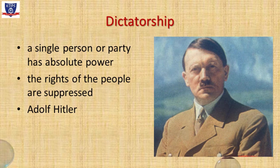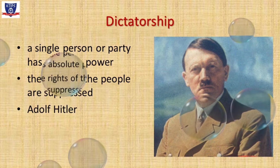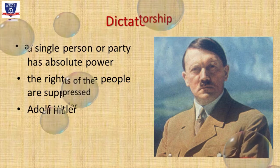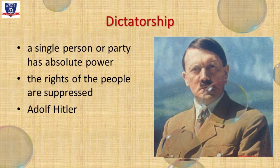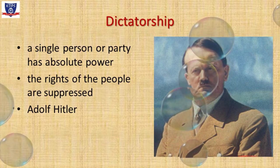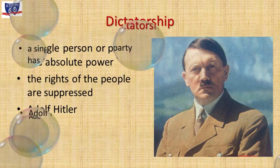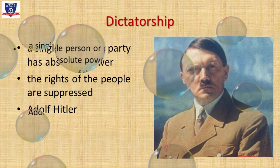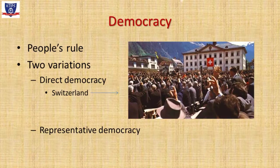Another form of government is dictatorship, which is a type of government in which a single person or party has absolute power and the rights of the people are suppressed. The leaders of dictatorship are known as dictators, but they are not addressed as such in the modern world — they might be called president or prime minister. You might have heard of Hitler, who took over Germany as a dictator. Typically, dictators are put into power when a nation faces significant social issues such as high unemployment or unrest. Both a monarch and a dictator have absolute powers and are above the law — they are not accountable to the people.